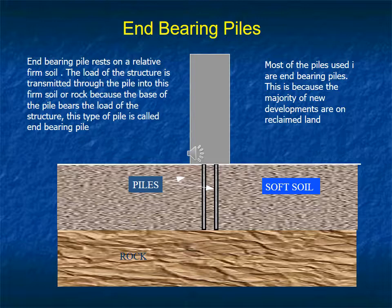End Bearing Piles. An end bearing pile rests on a relatively firm soil. The load of the structure is transmitted through the pile into this firm soil — the base of the pile bears the load of the structure. This type is called an end bearing pile, as shown in the figure.